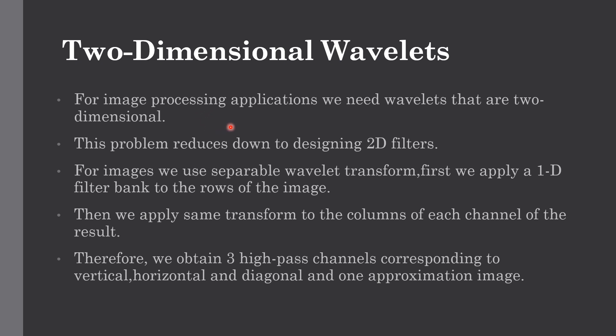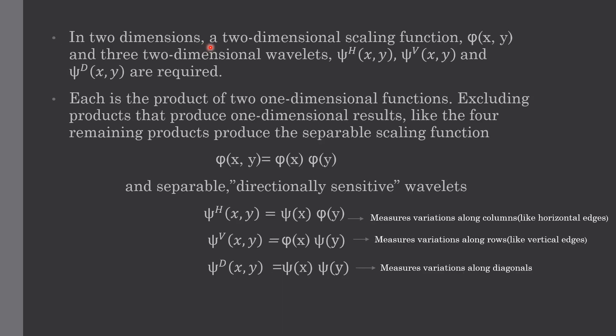When it comes to image processing applications, there is need for wavelengths that are two-dimensional. This reduces down our problem to designing 2D filters. For image processing, we use separable wavelet transforms in which we apply 1D filter bank to the rows of the image first and then we apply the same transform to the columns of the obtained result. Therefore, we finally obtain three high-pass channels corresponding to vertical, horizontal, diagonal and one approximation image in each iteration.